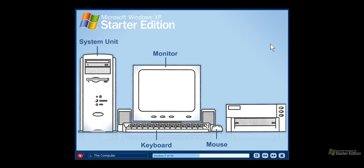The system unit is the central part of the computer. Most system units contain a processor that runs the computer, memory that allows you to access and work with information more quickly, a hard drive that stores your programs and files, as well as components such as CD and DVD players. Speakers allow you to hear sounds from your computer — for example, your computer can notify you when an email arrives or play your favorite music CD. Printers are what you use to produce copies of documents that you create on your computer. Watch the next getting started video to learn about the mouse.